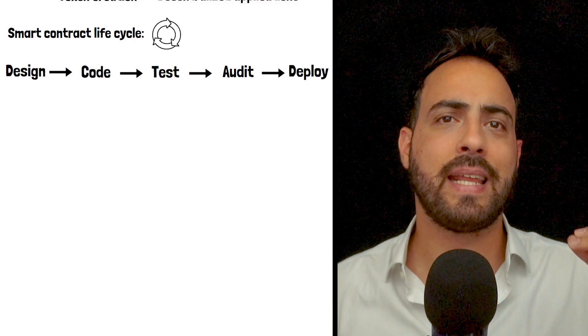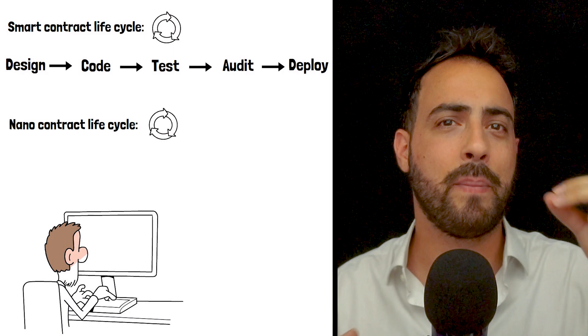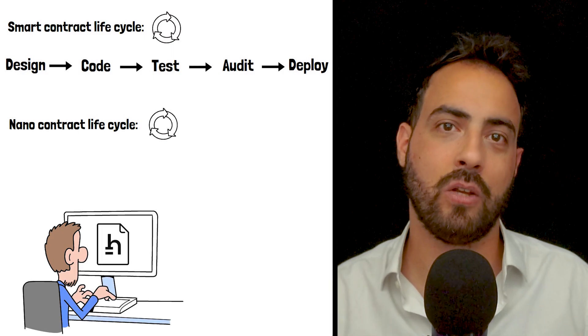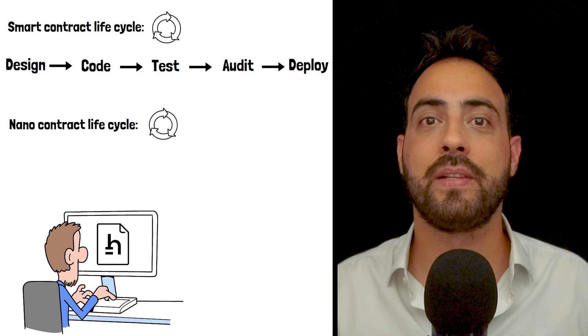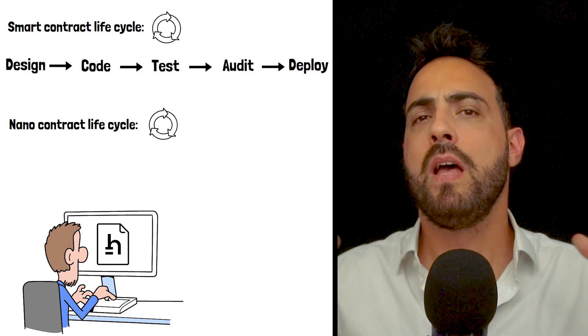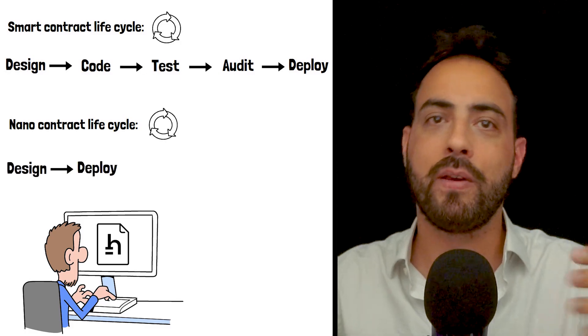On the other hand, creating a nano-contract is much simpler. Instead of coding from scratch, you select a pre-existing blueprint from Hathor's catalog and then you simply customize the blueprint by setting specific parameters for your use case. This process requires only two main steps, designing and deploying it.